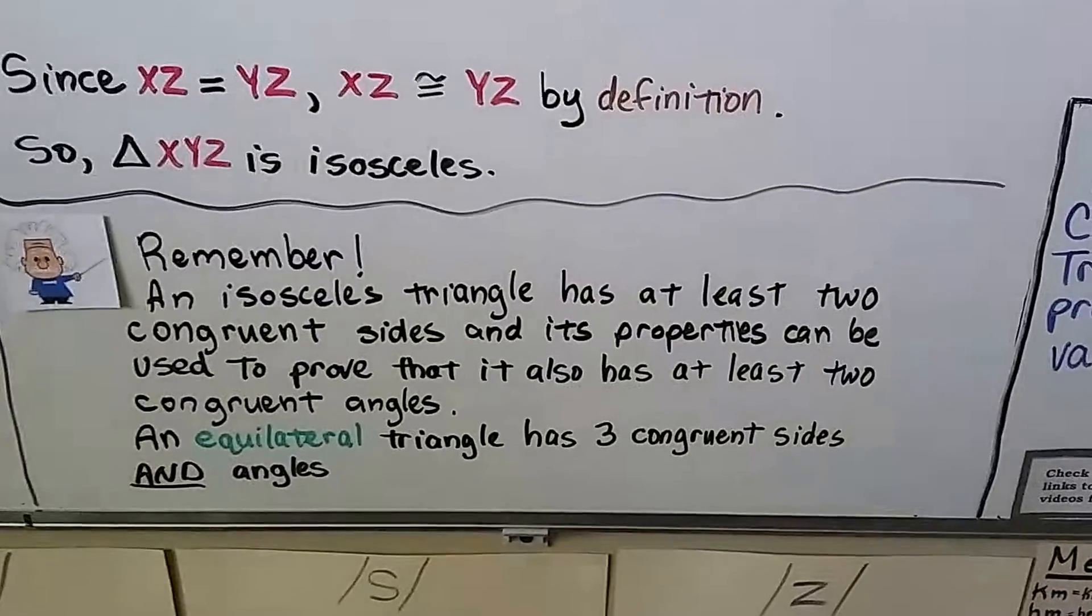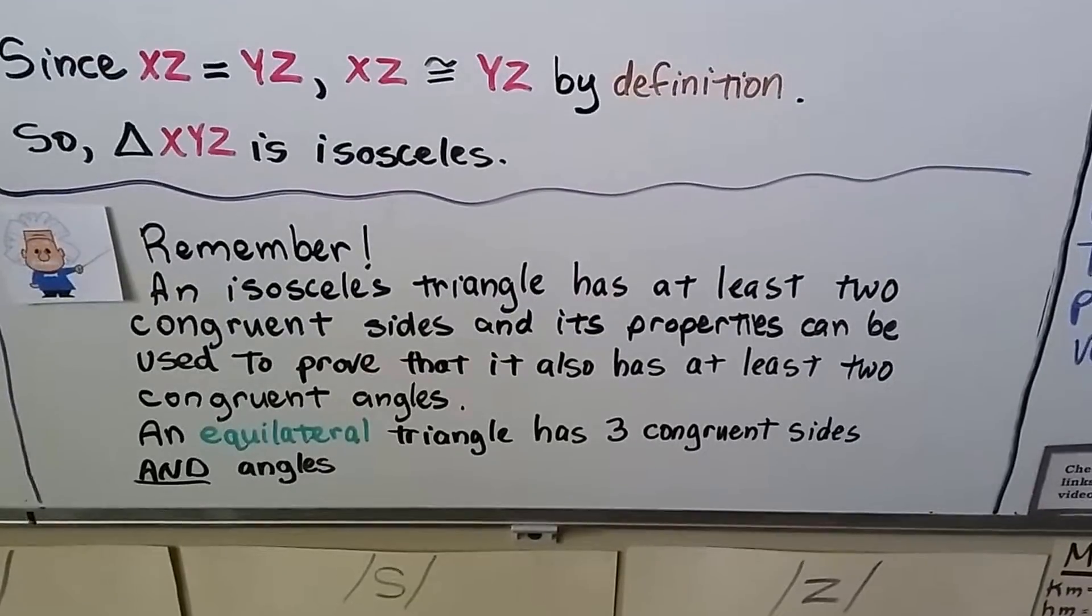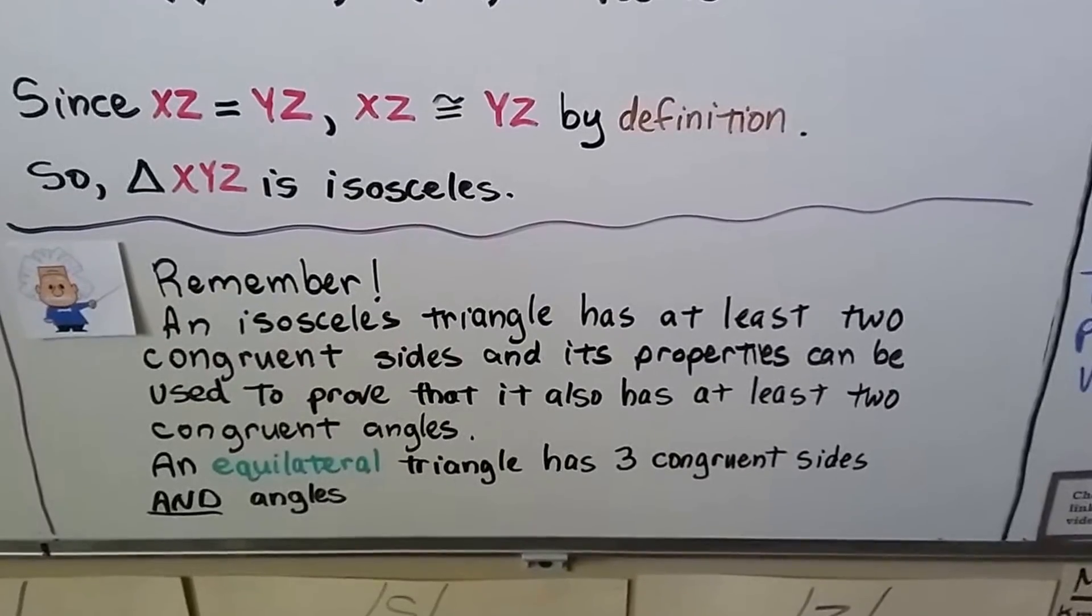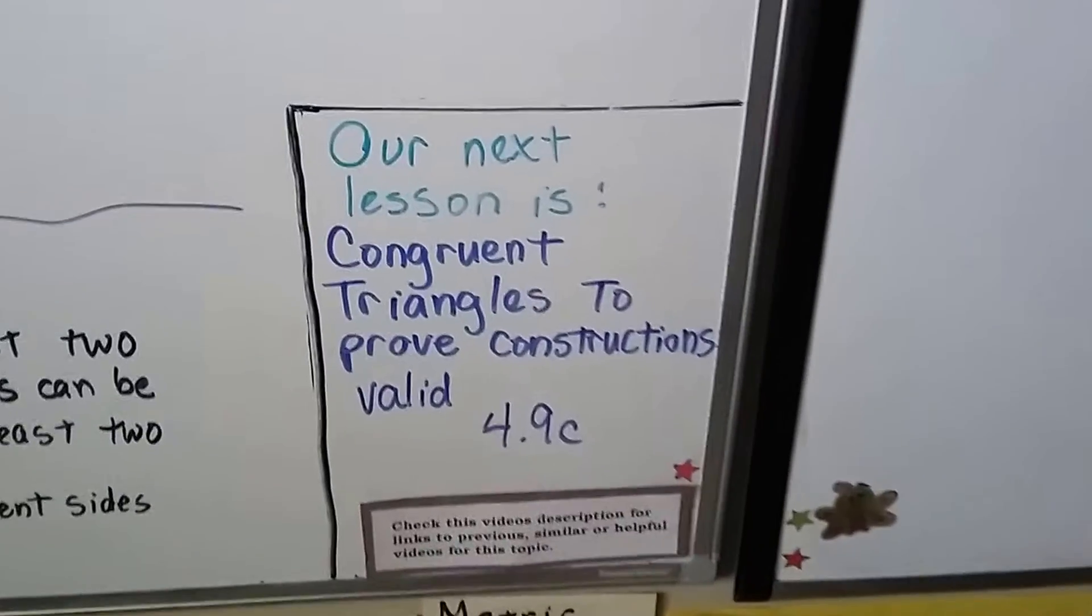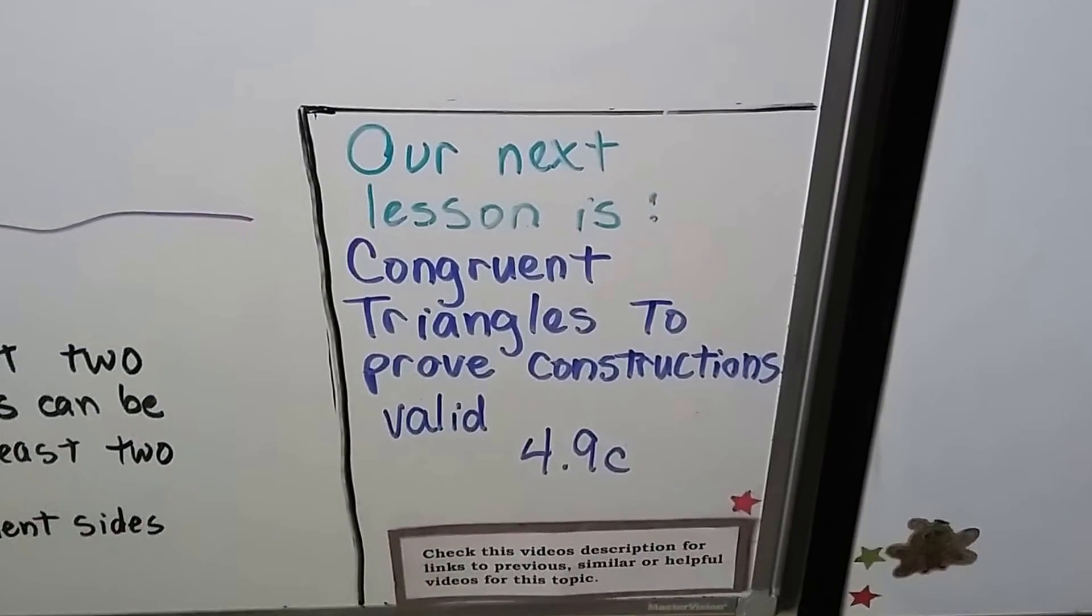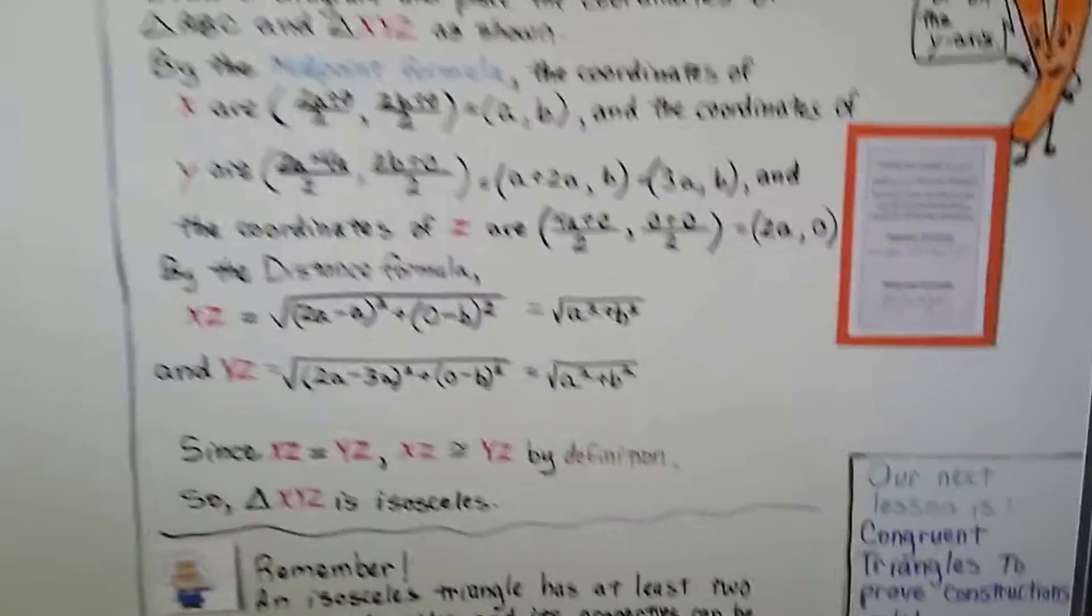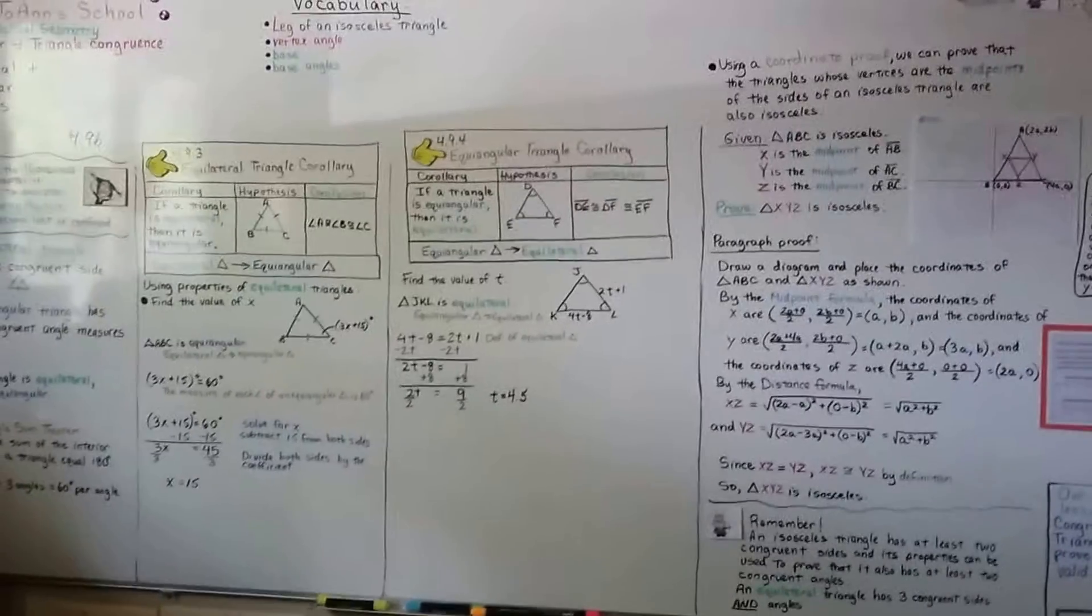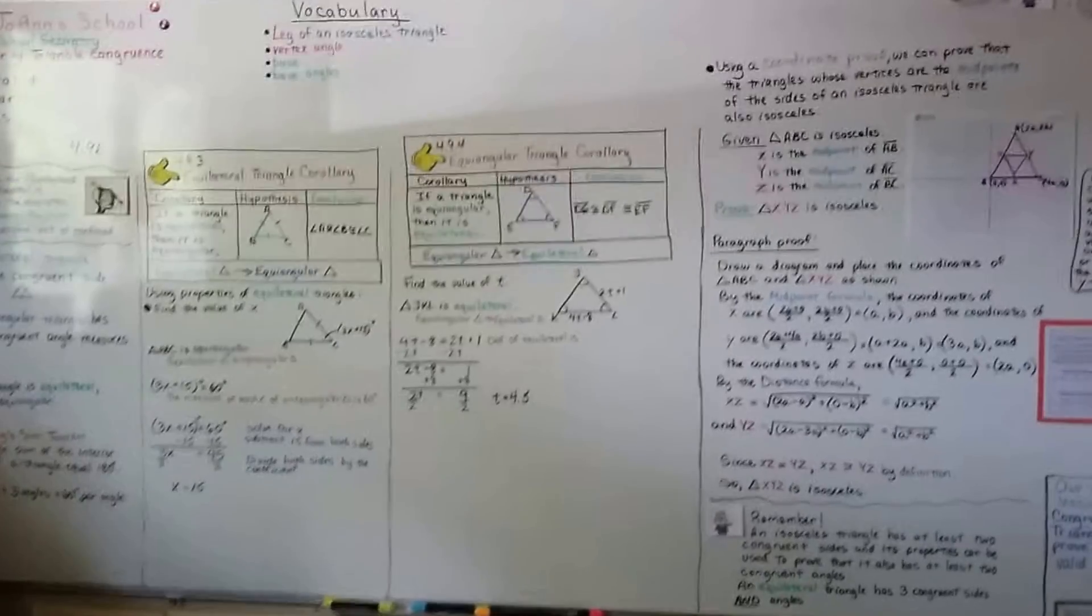So remember, an isosceles triangle has at least two congruent sides, and its properties can be used to prove that it also has at least two congruent angles. An equilateral triangle has three congruent sides and angles. Our next lesson is congruent triangles to prove constructions valid. That's 4.9C. It's going to be our last video before we start chapter five. So I hope you were able to write down these corollaries. They're going to be useful for proofs. And I hope you're doing well. I hope you have a great day. Hit that like button for me, and I'll see you next time. Bye!